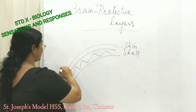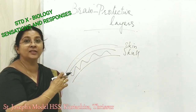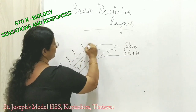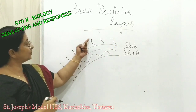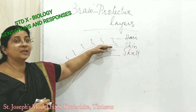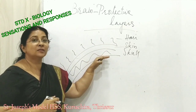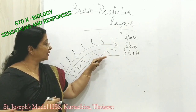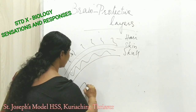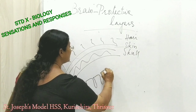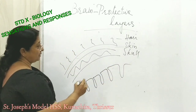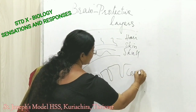Above the skin, if you are fortunate enough, you will have some beautiful layers of hair on it. So hair as well as skin give some protection to the skull. The next layer is between the skull and the cerebral cortex — the outer part of the cerebrum — which is called the cerebral cortex.